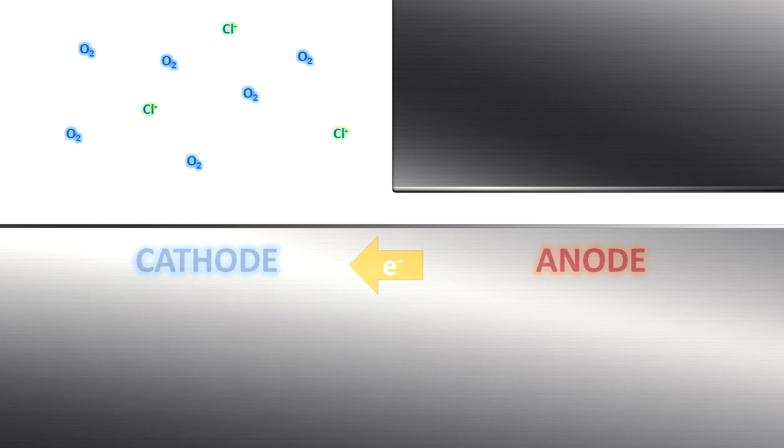Due to naturally occurring reactions, the oxygen quickly depletes in the gap, and the concentration of metal ions increases. This leads to the formation of a galvanic couple, with the crevice becoming anodic and the surrounding area becoming cathodic.